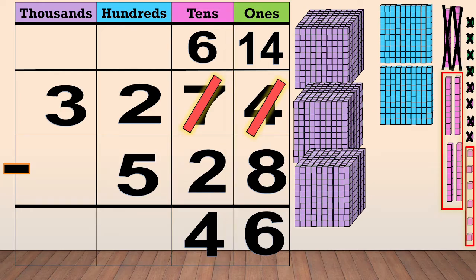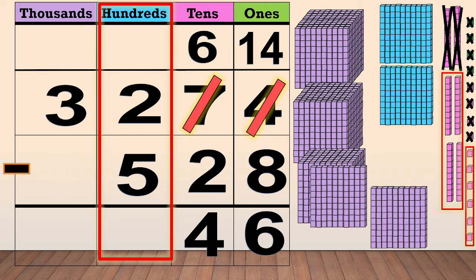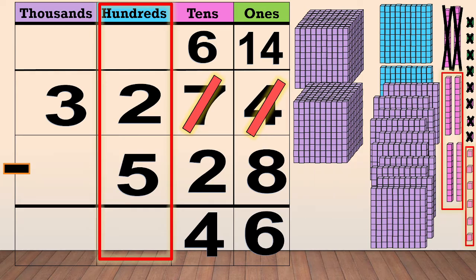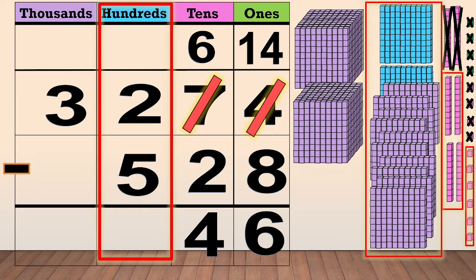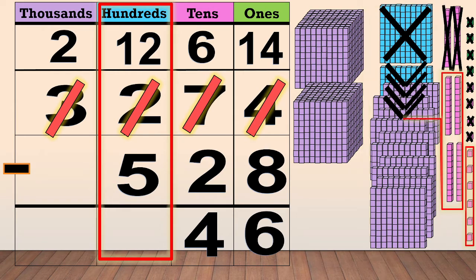Now, we subtract the hundreds: 2 minus 5. We cannot subtract 5 from 2, so we need to regroup 1,000 into 10 hundreds. Now we have 12 hundreds. We cross out the 2 and write 12 as new hundreds. Now we only have 2 thousands — we cross out the 3 and write 2 at the top. We subtract the hundreds: 12 minus 5 equals 7.